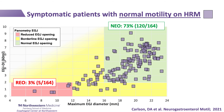However, while achalasia patients will consistently have abnormal FLIPs, it is essential to recognize that not all abnormal FLIPs are achalasia. We recently published a study that specifically included patients with an HRM classification of normal esophageal motility who also completed FLIP planometry. Among this cohort, 73 percent also had normal EGJ opening on FLIP, leaving 27 percent with abnormal EGJ distensibility.